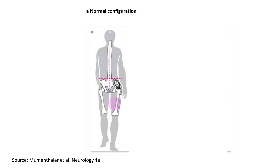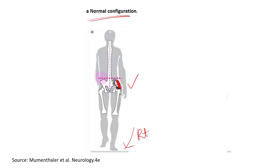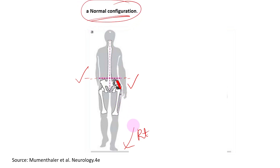Now let's look at the Trendelenburg sign. In a normal configuration, a person is standing on the right foot and the abductor mechanism muscle contracts, so the pelvis is stabilized. This is the normal configuration when the abductor mechanism is functioning normally.